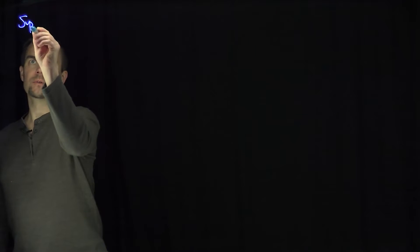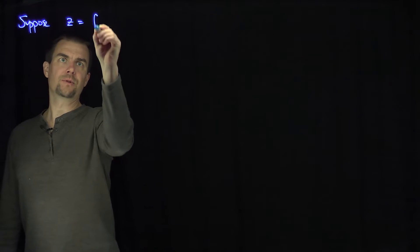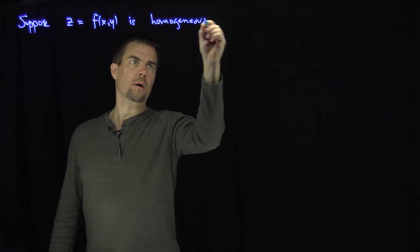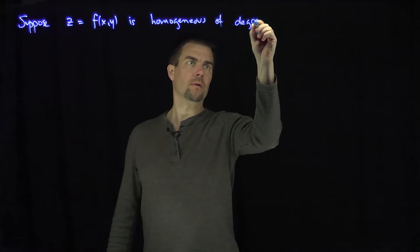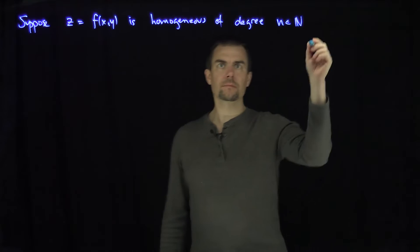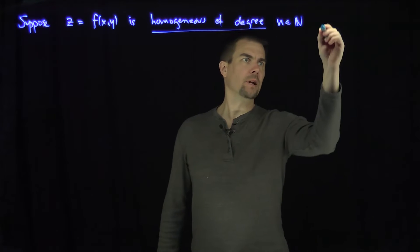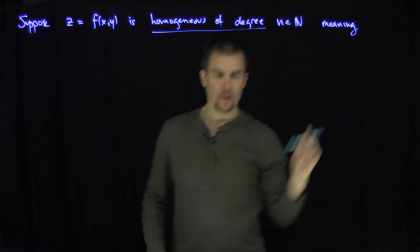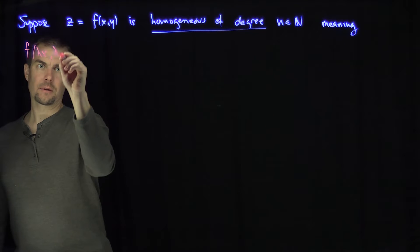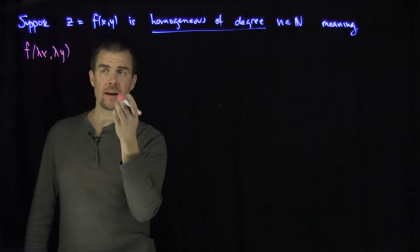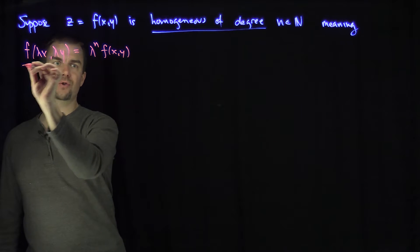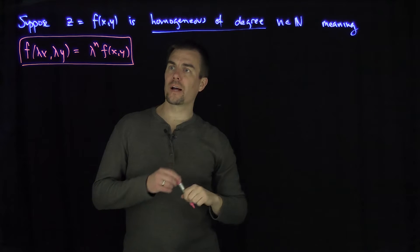Let's suppose we have a function z equal to f of x, y that is homogeneous of degree n, where n is a natural number. This means that if I dilate the variables by lambda, I can factor out a lambda to the power n: f(lambda x, lambda y) equals lambda to the n times f(x, y). This condition defines homogeneous of order n if it holds for all x and all y.